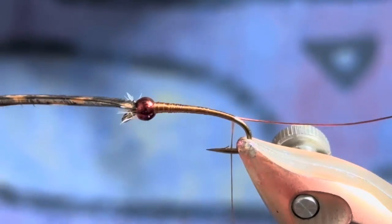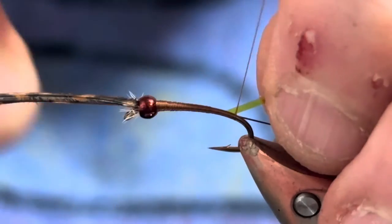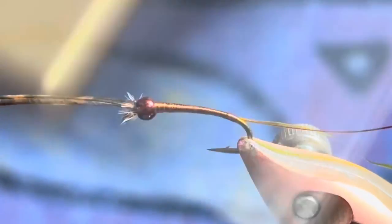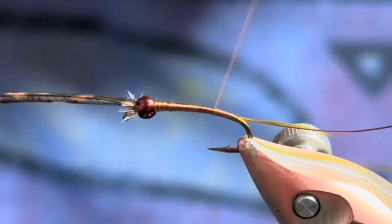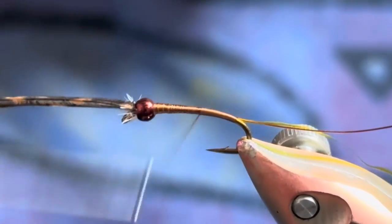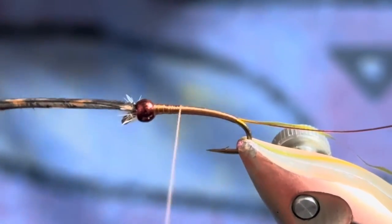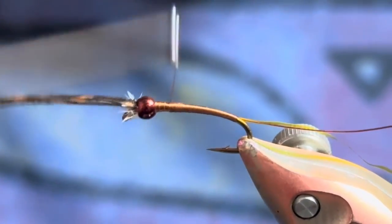Now I'm going to grab just a single strand of buzzer wrap, and this is the olive color. I'll capture that right at the very back there and start to come back up with nice touching wraps.